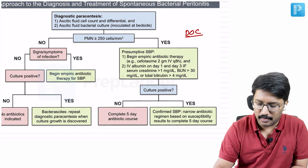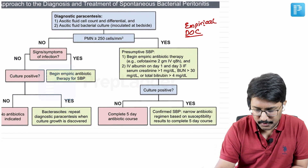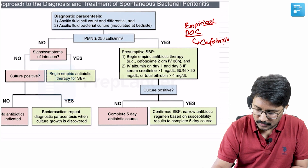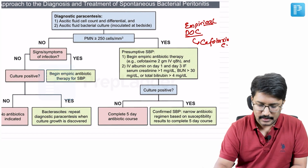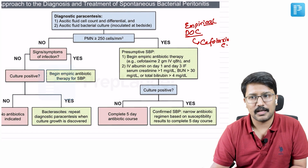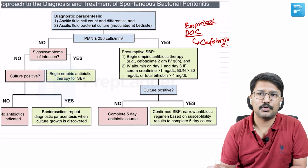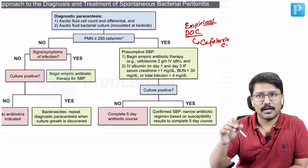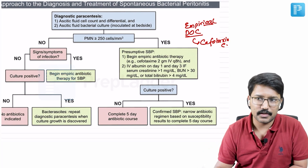The drug of choice for empirical treatment is cefotaxime. You start cefotaxime usually at 2 grams IV, 8-hourly. If the patient's albumin levels are low, you may also need to give albumin, because hypoalbuminemia — especially low albumin levels in the ascitic fluid — is considered a risk factor.